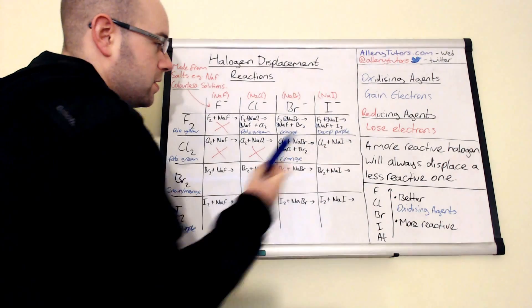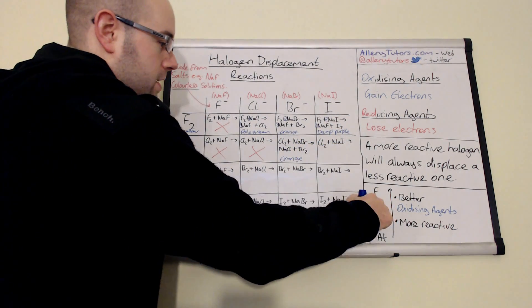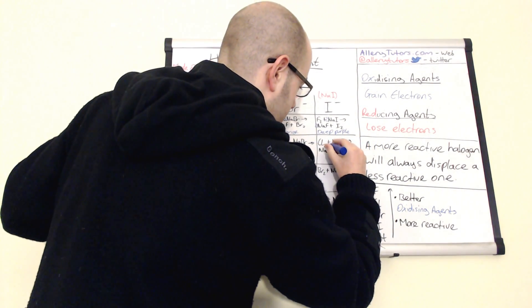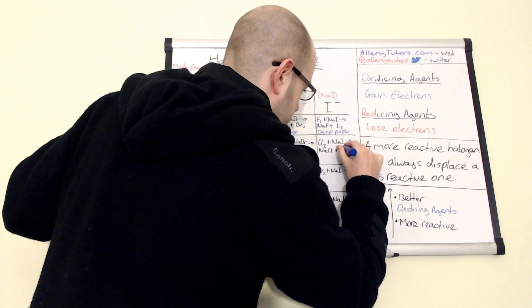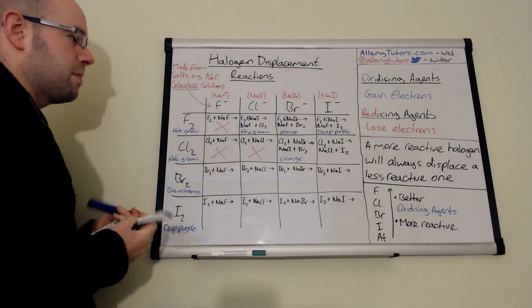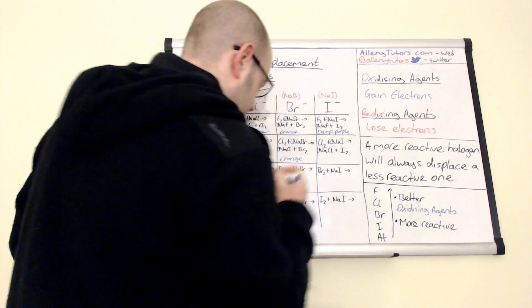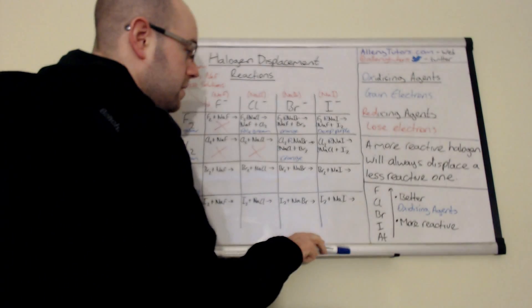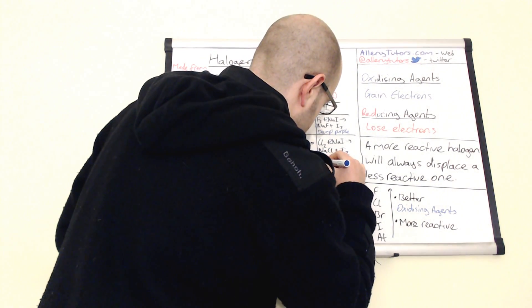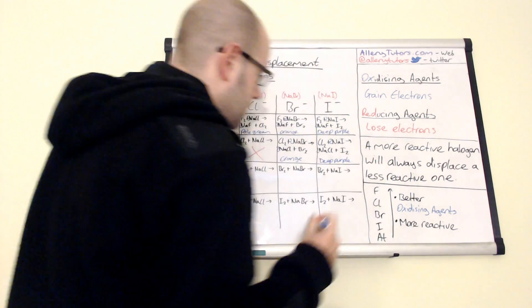Next: Cl2 plus NaI. Chlorine is more reactive than iodine because it's higher up in the group, so we form sodium chloride plus I2. Balancing the equation with twos in the same places. We get that deep purple colour again because we've formed iodine — that's a classic sign that a reaction has occurred.